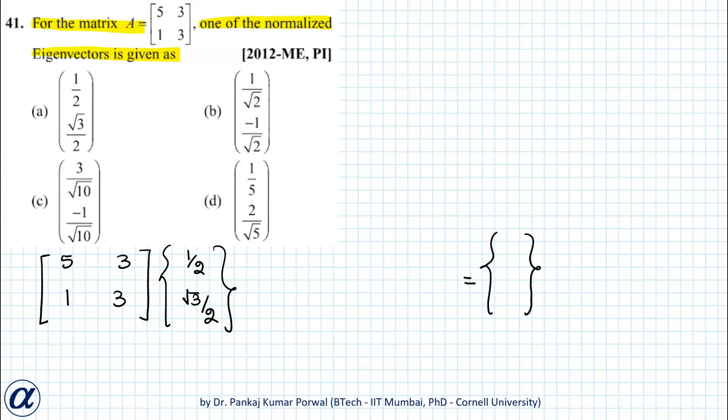So here this row multiplied by this column gives me 5 plus 3 root 3 by 2, and then this row multiplied by this gives me 1 plus 3 root 3 by 2. This does not look like scaling.